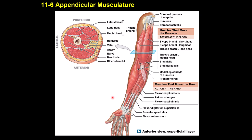Muscles affecting the elbow include the biceps, brachialis, and brachioradialis — all three cause flexion of the elbow. The triceps muscle causes extension of the elbow.